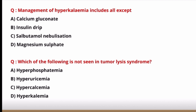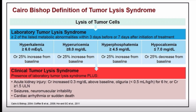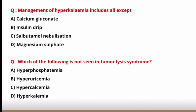Next question: which is not seen in tumor lysis syndrome — hyperphosphatemia, hyperuricemia, hypercalcemia, or hyperkalemia? Using the Cairo-Bishop definition, laboratory criteria include: hyperkalemia more than 6, hyperuricemia more than 8, hyperphosphatemia more than 4.5, but hypocalcemia less than 7 mg/dL. Clinical criteria include AKI, seizures, neuromuscular irritability, cardiac arrhythmia, or sudden death. Hypercalcemia is not found — hypocalcemia is seen. Option C is the correct answer.